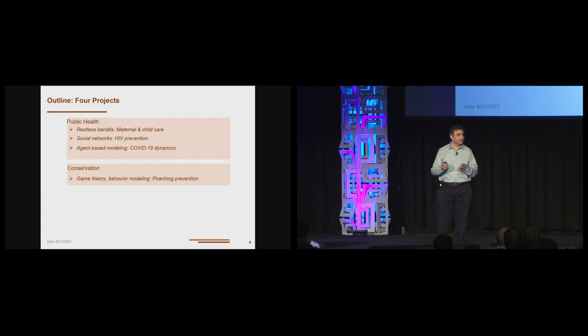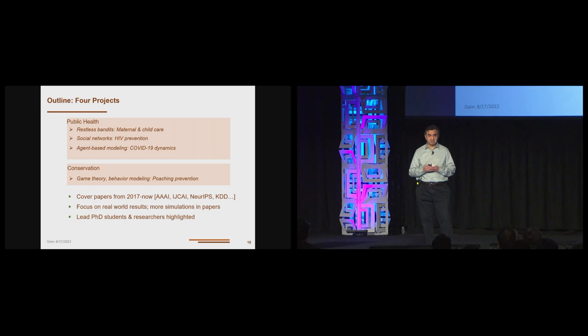Following that, a predictive model makes predictions on which of the cases faced by a non-profit are high-risk or low-risk. Since we can't intervene on all of the high-risk cases, a prescriptive algorithm then makes recommendations on which cases to actually intervene on. And finally, field testing and deployment is crucial because this is AI for social impact. If we don't have social impact, then it is not AI for social impact.